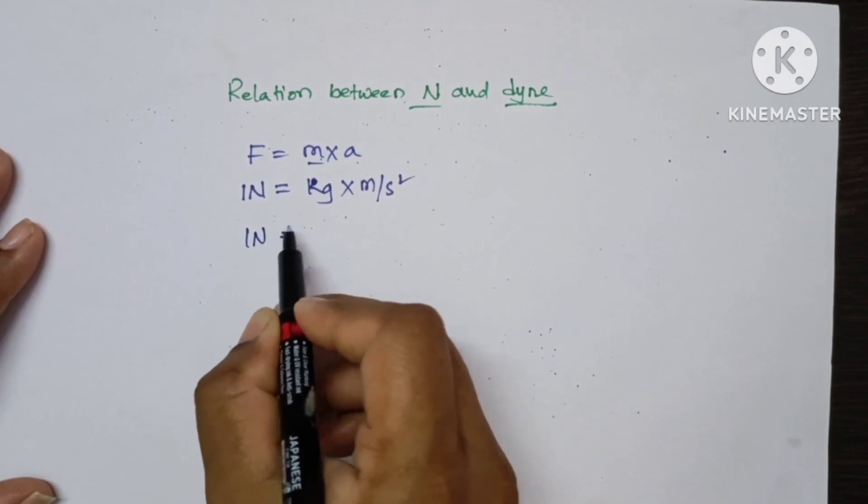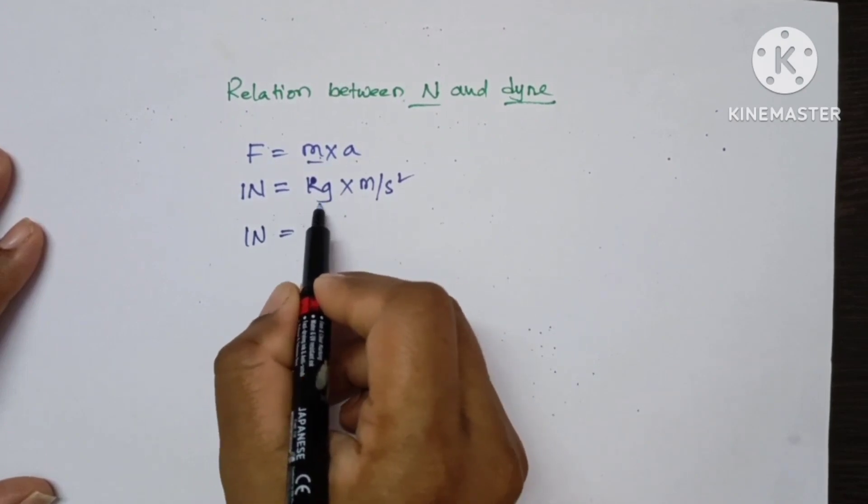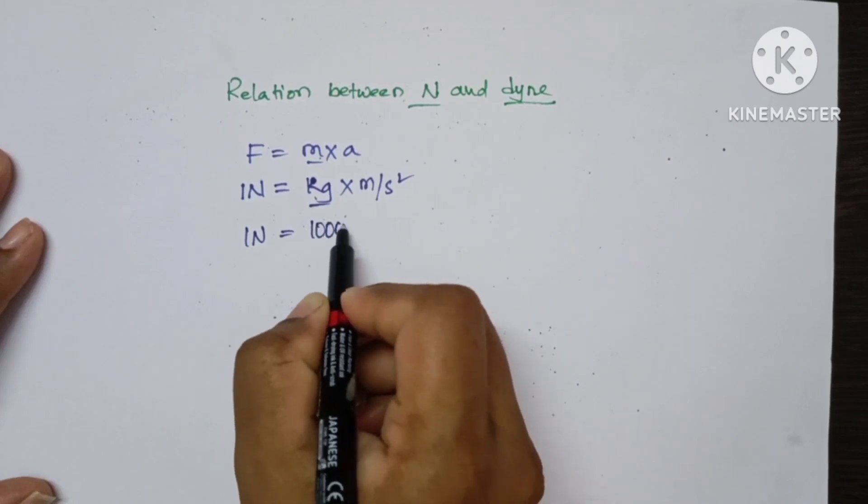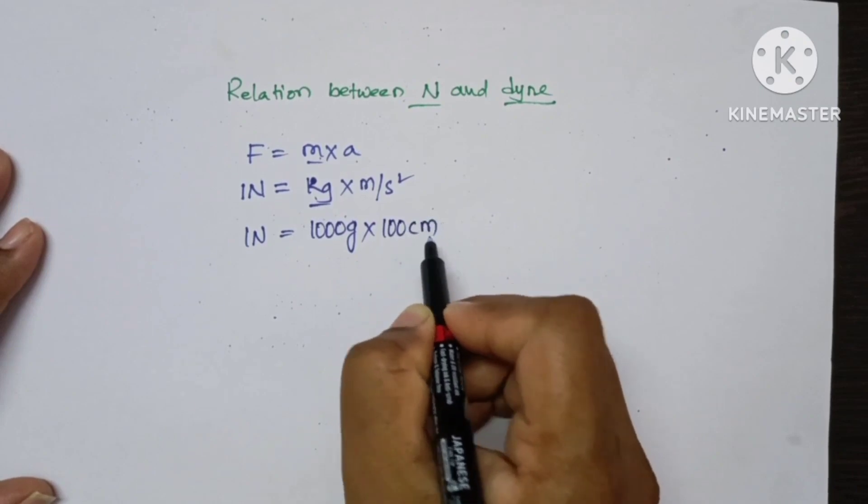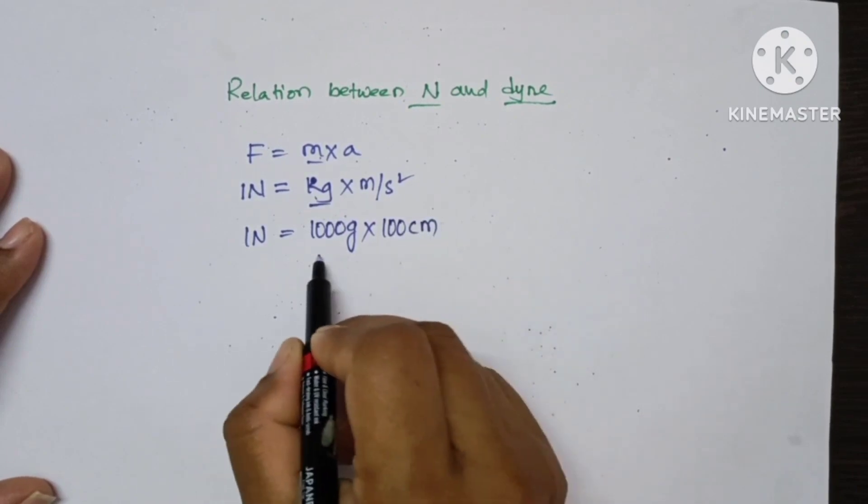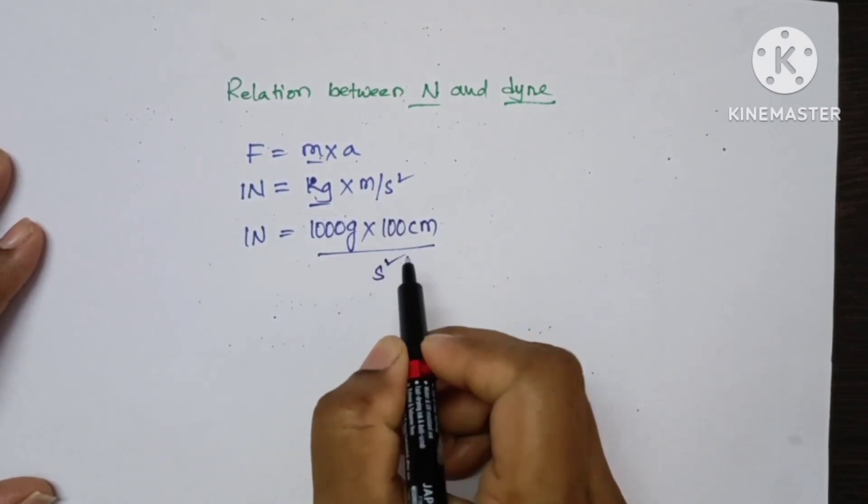Now convert this into CGS unit. 1 kg is equal to 1000 grams and 1 meter is equal to 100 centimeters upon second square.